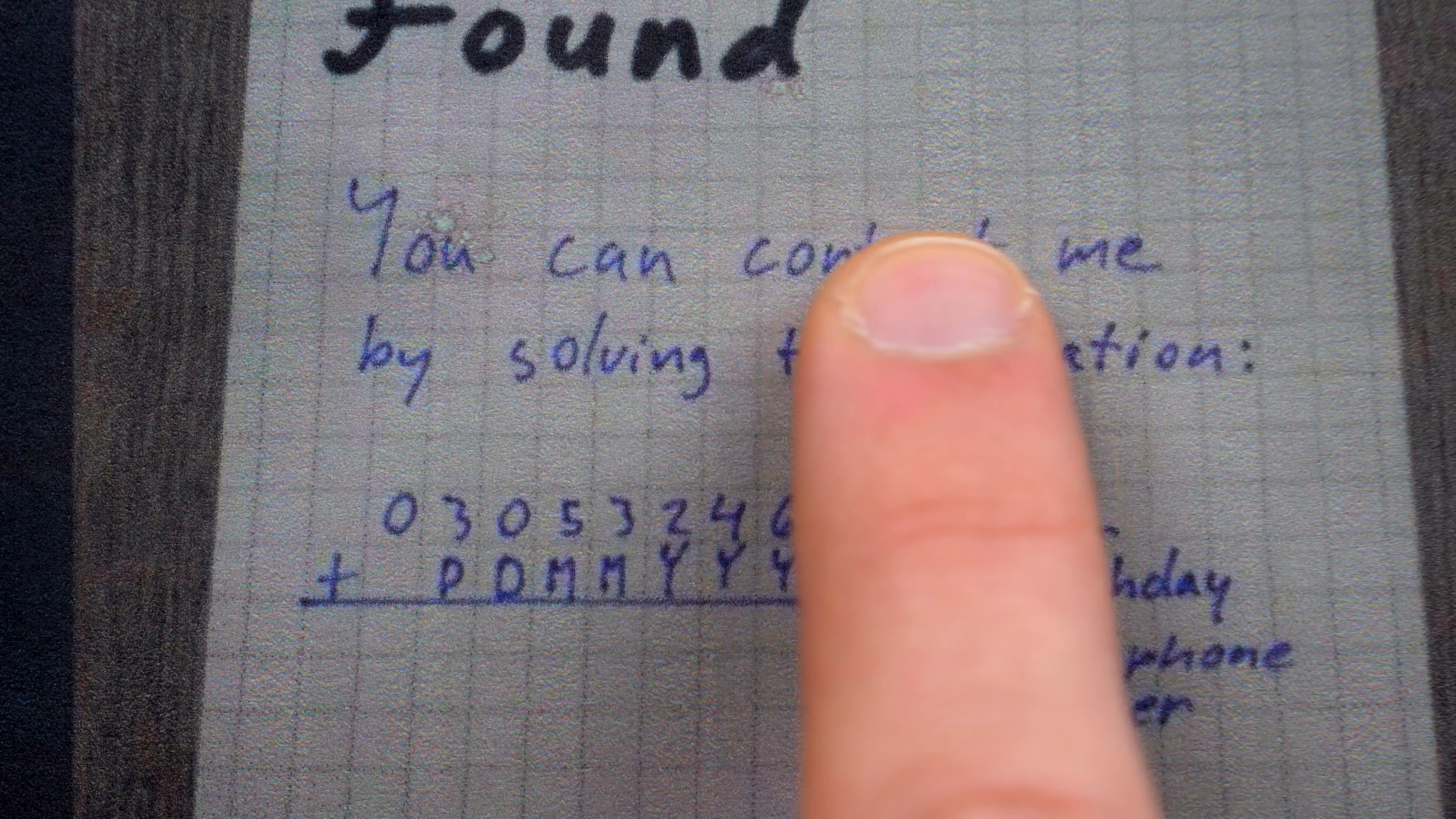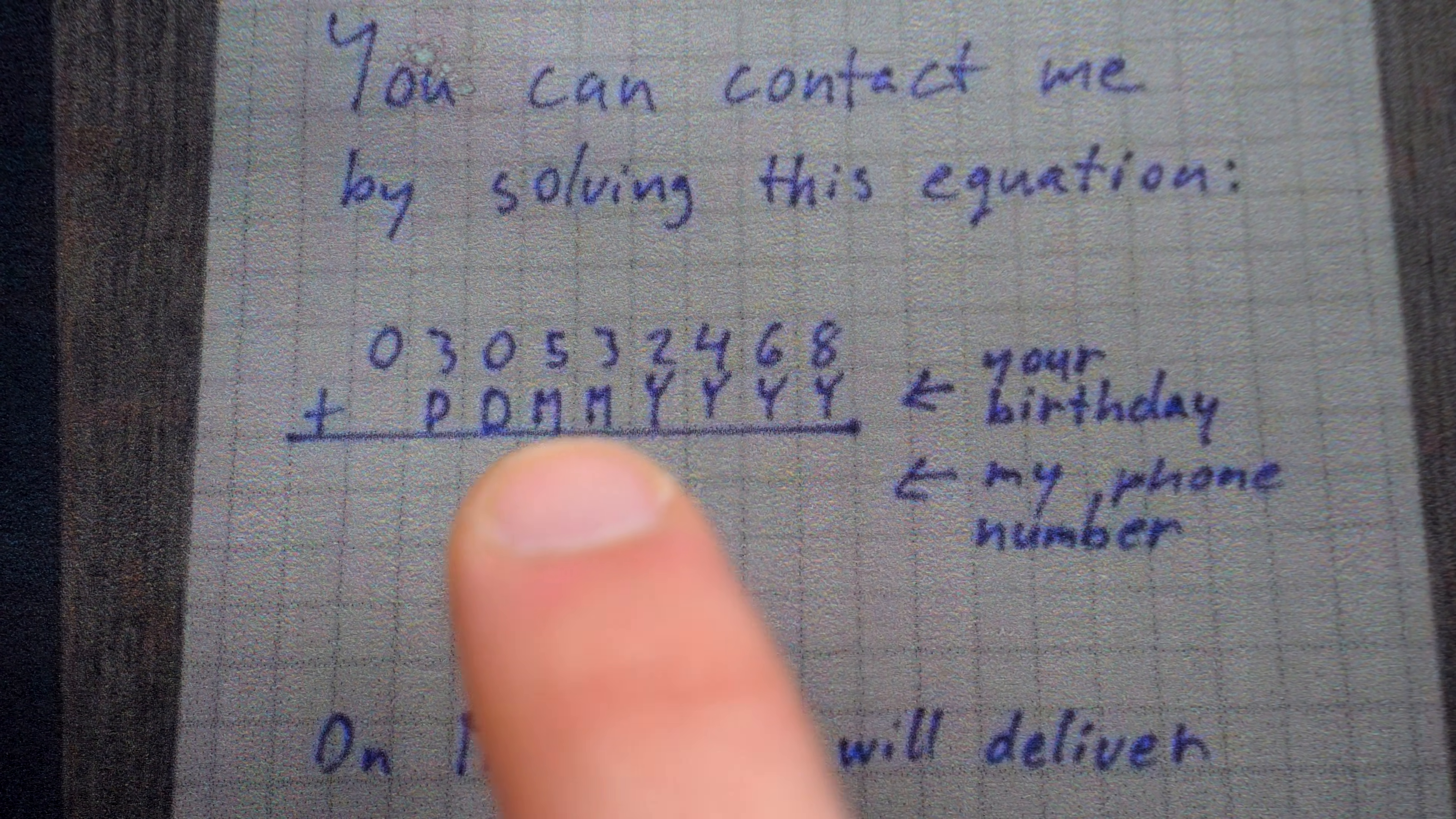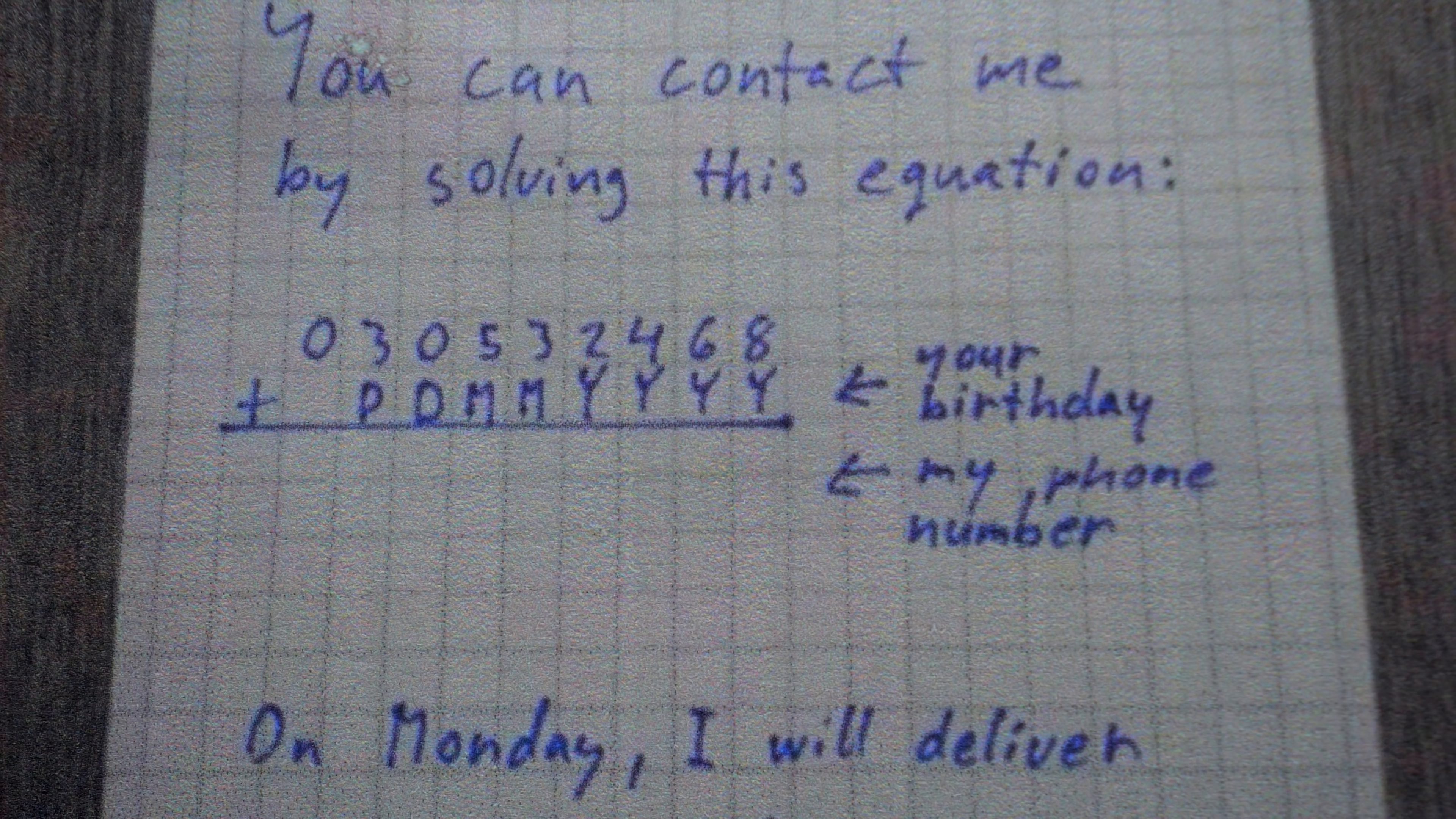Black wallet found. You can contact me by solving this equation. A sum of two numbers - this one with the wallet owner's birthday to produce the discoverer's phone number. On Monday, I will deliver it to the police station, in case this math problem proves too difficult.